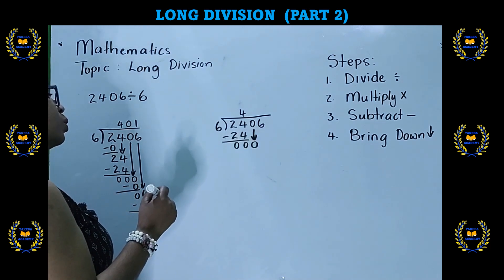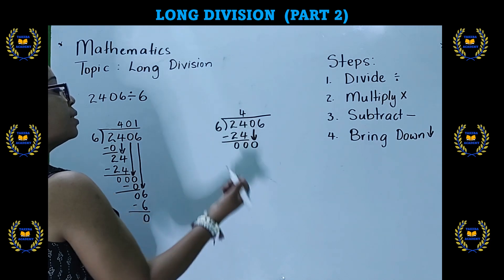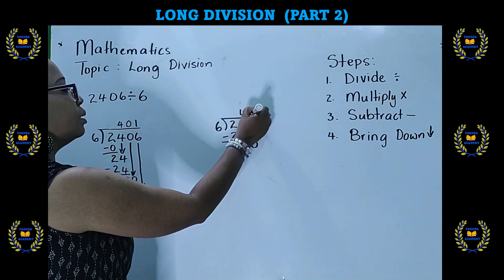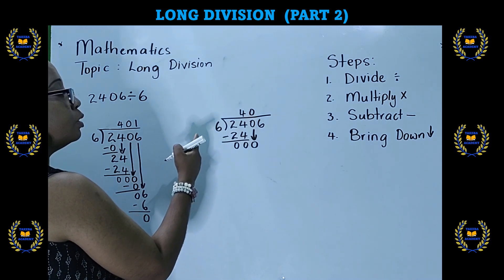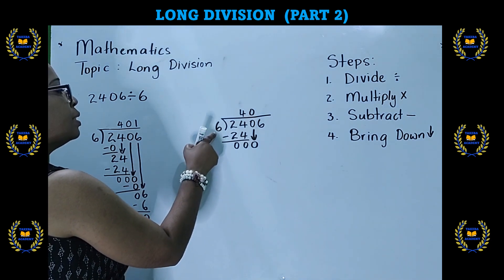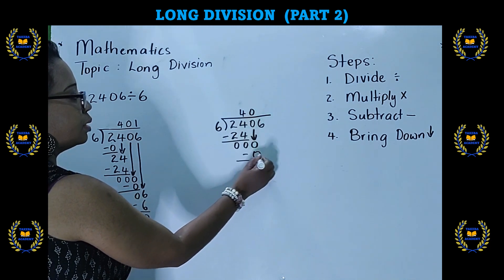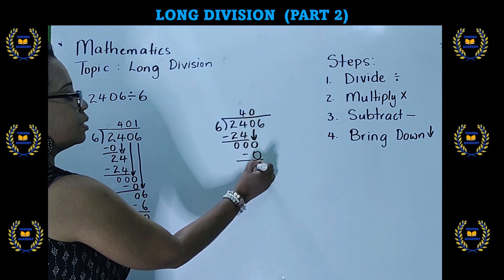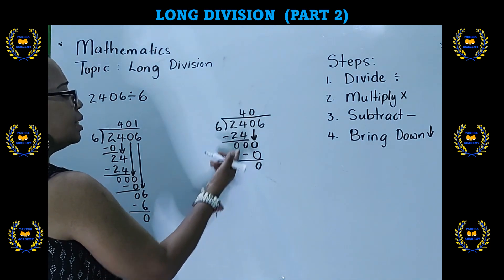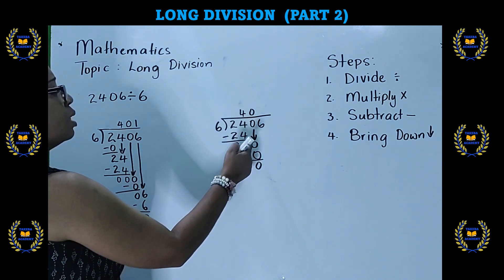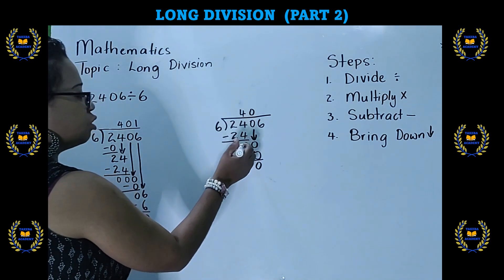Then we bring down again. Pay attention to where the number goes when we bring it down. 0 divided by 6. Again, we count, so that's a 0. Then we go to our second step. 6 times 0 is 0. Third step, we subtract. 0 take away 0 is 0. And just for the benefit of those who are wondering, why is it that I'm not bringing down these 0s? Since there's only one 0 we're dividing here, then I just put the answer here. These, remember I said before, these are insignificant.